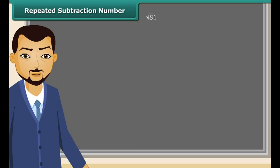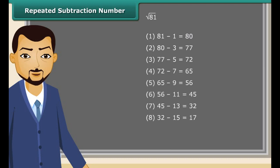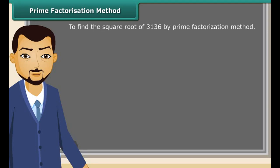We can find the square root of a given number using repeated subtraction method. It is really easy. Consider the square root of 81. Just subtract successive odd numbers from 81 starting from 1 till the difference becomes 0. So, you have noticed it took 9 steps to get the difference as 0. Therefore, the square root of 81 is 9.